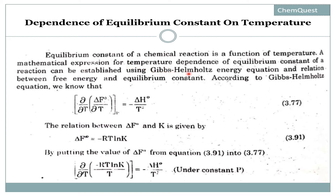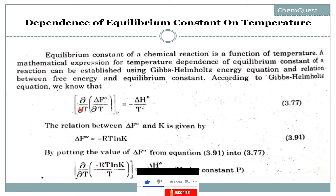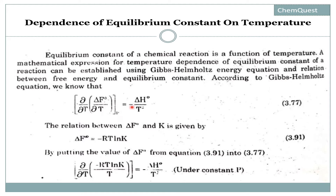You should know what the Gibbs-Helmholtz free energy equation is. In order to establish a relationship for the dependence of equilibrium constant on temperature, we use the Gibbs-Helmholtz equation, which is given by: (∂/∂T)(ΔF°/T) at constant pressure equals minus ΔH°/T².